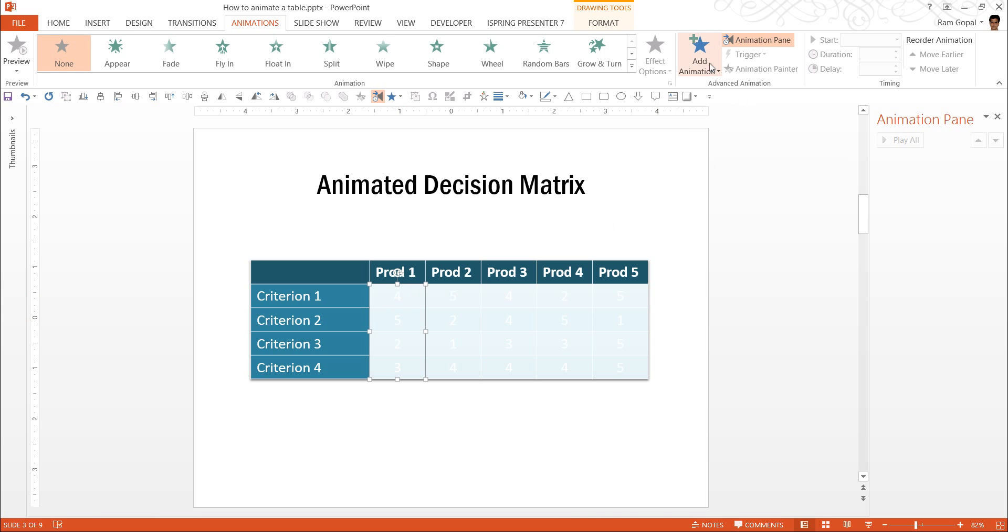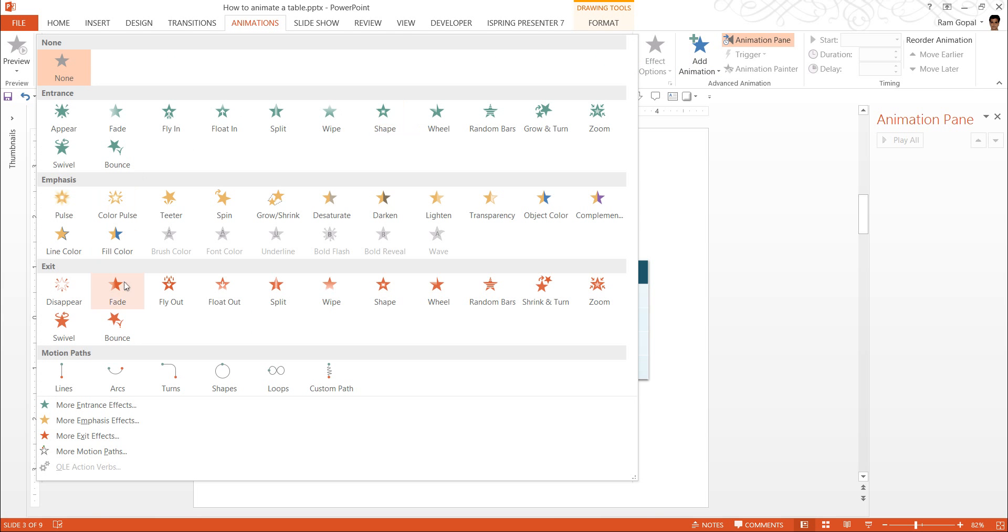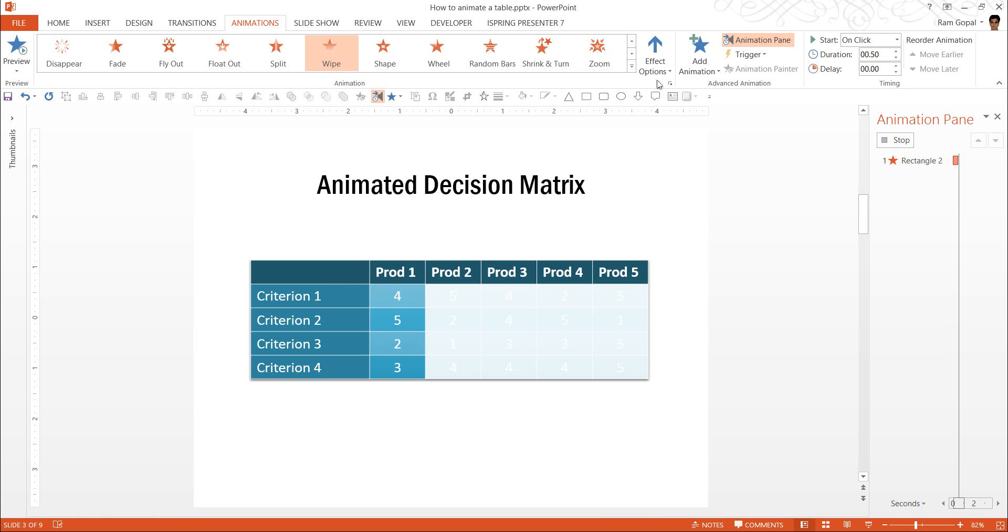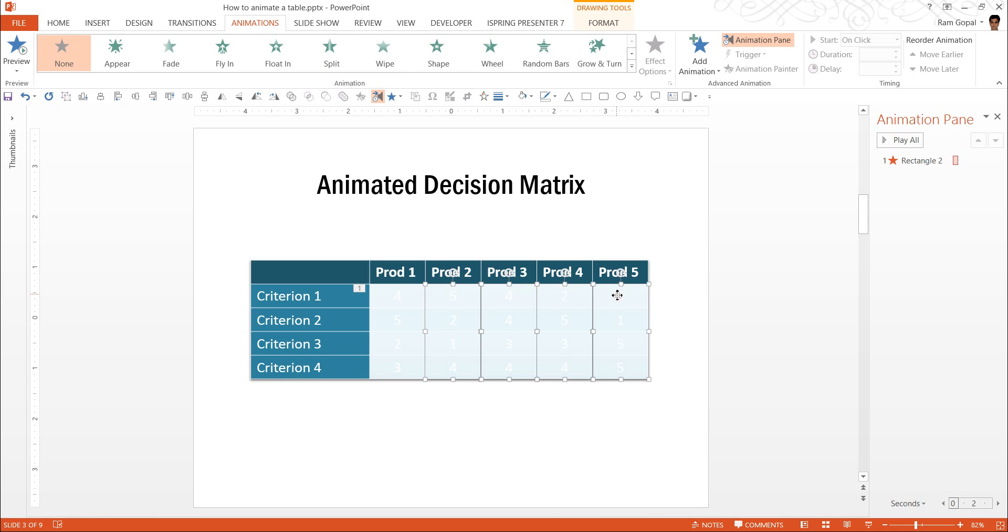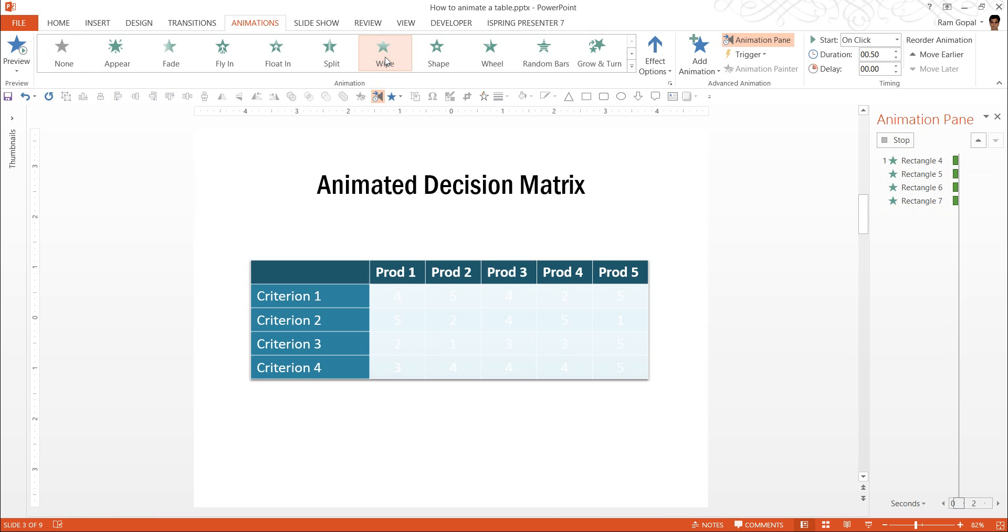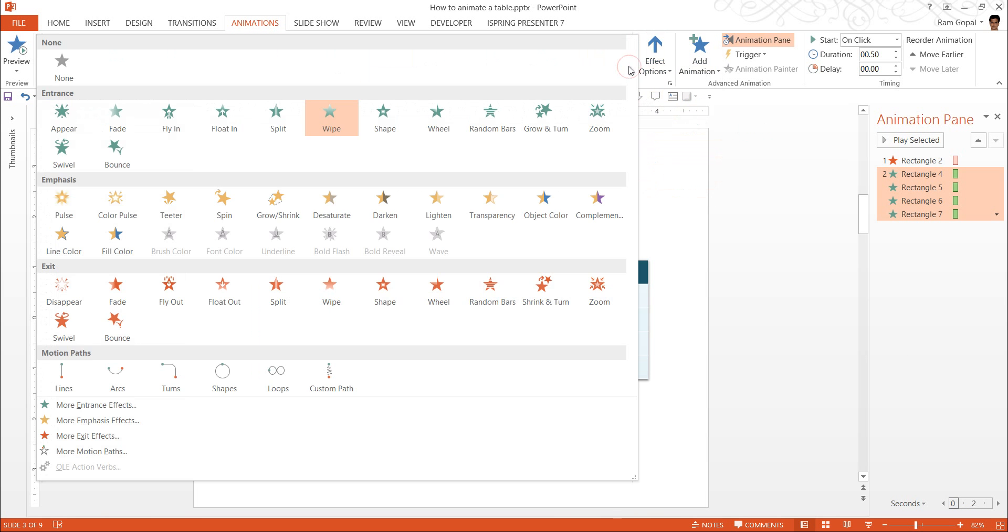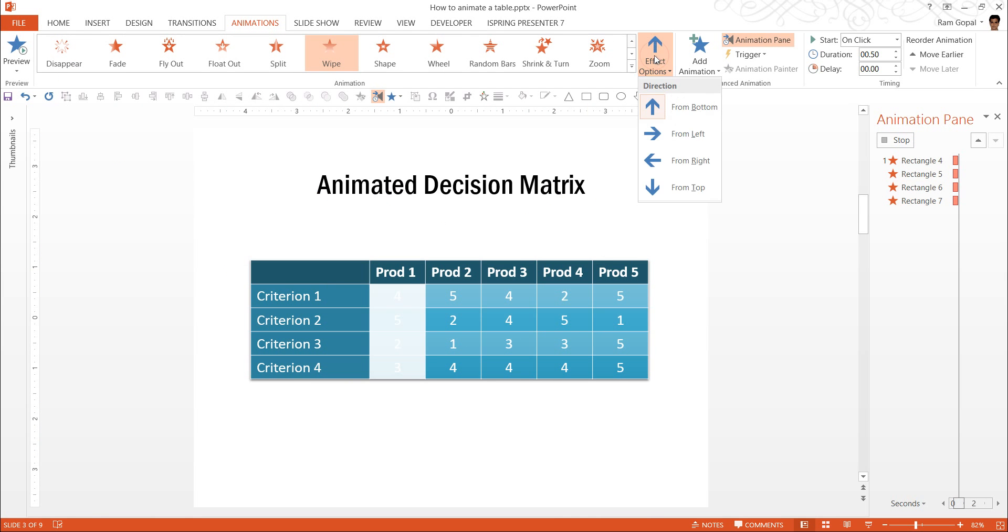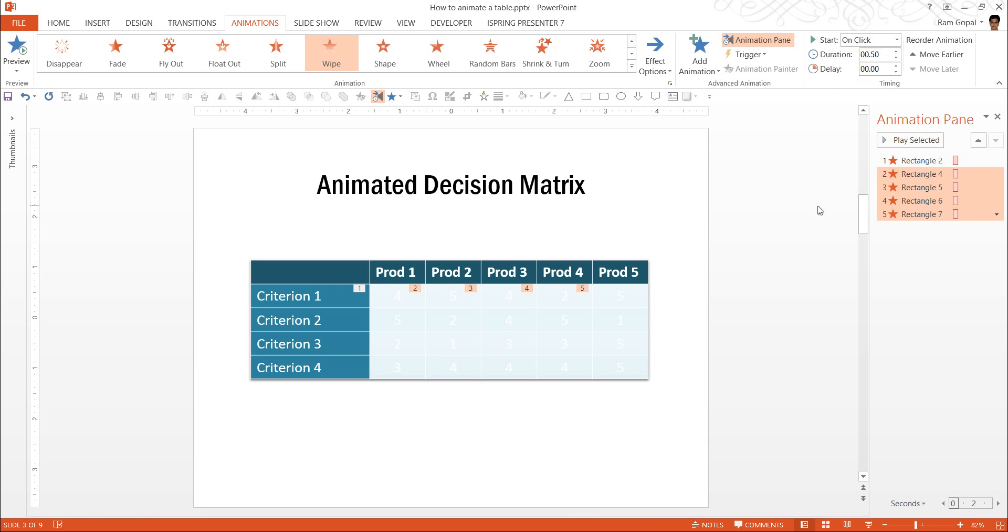First I select this. I can either choose to add animation or I can go and see these variations here. First I am going to choose wipe animation. And this one can be from left. And the same way I am going to select all these one after another. I am going to use exit animation wipe from left. And all of them have to be on click.